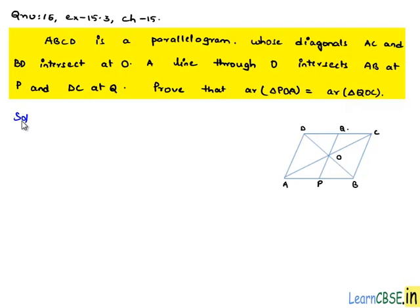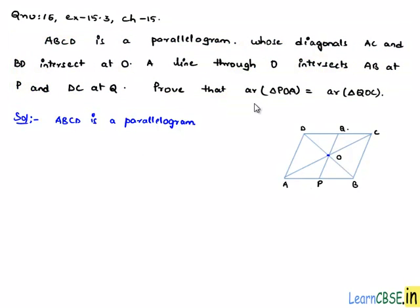Now, moving on to solution. Let us note the given information that ABCD is a parallelogram. AC and BD are diagonals that bisect at point O, and through point O a line is drawn such that it intersects AB at P and DC at Q as shown in the figure. We need to prove that area of triangle POA is equal to area of triangle QOC.